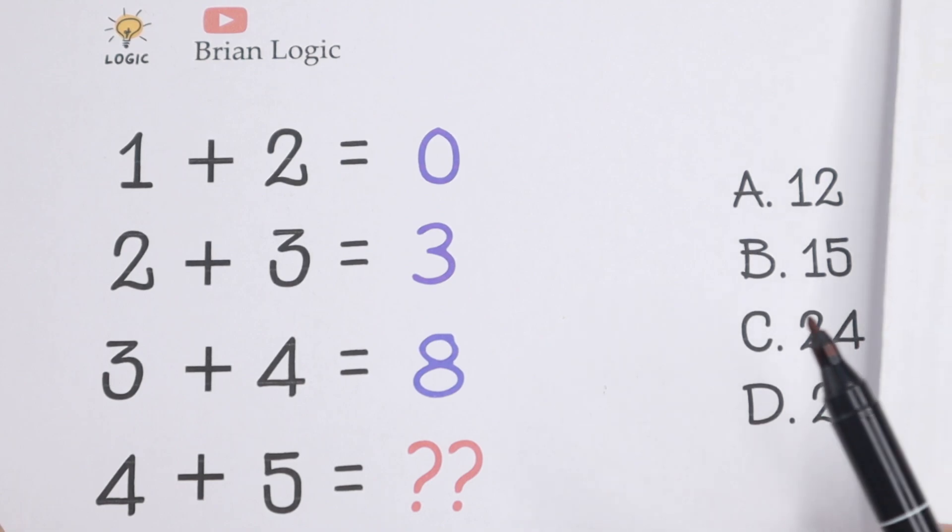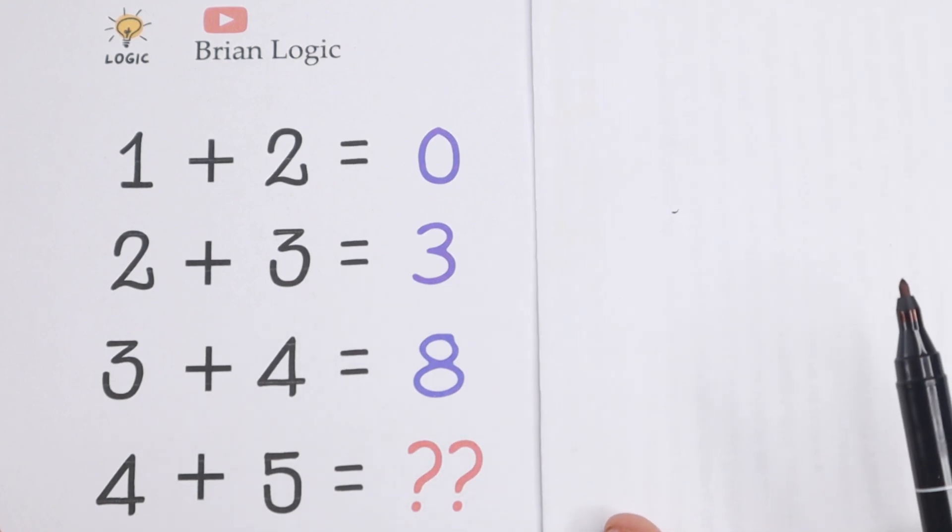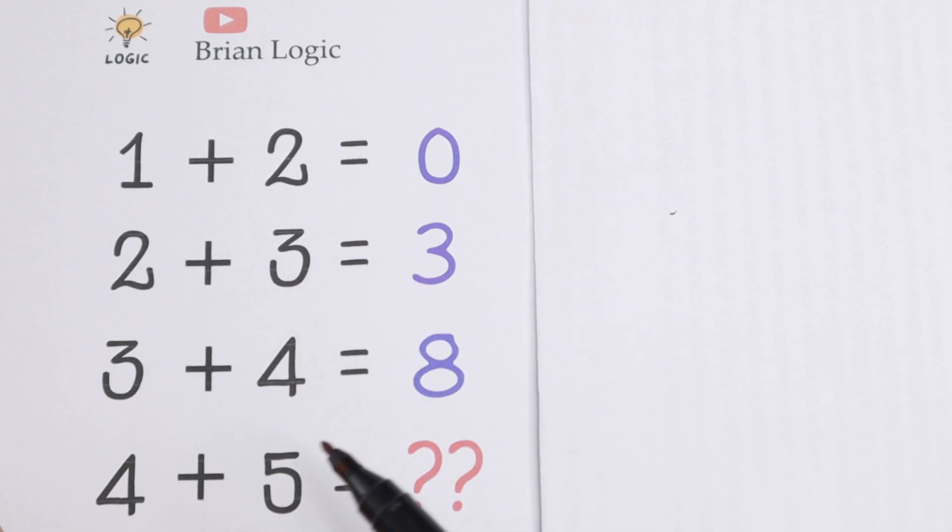So let's try to solve this problem. Take a look, we have 1 plus 2 equal to 0, 2 plus 3 equal to 3, which is incorrect, 3 plus 4 equal to 8, which is incorrect.